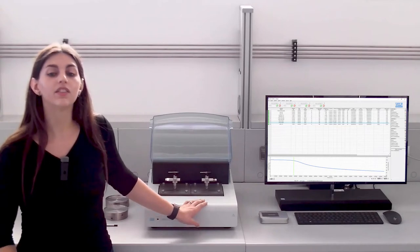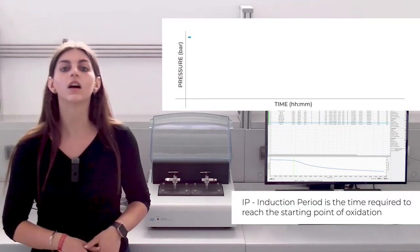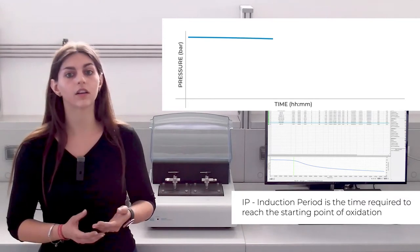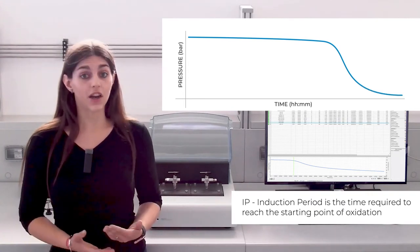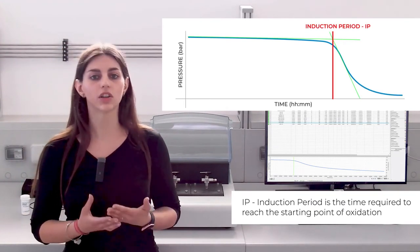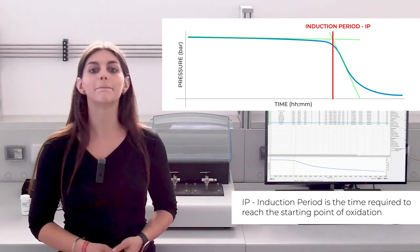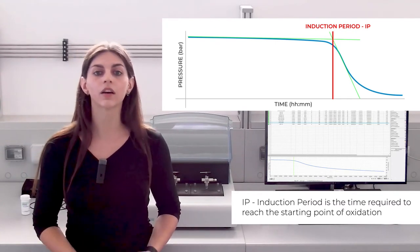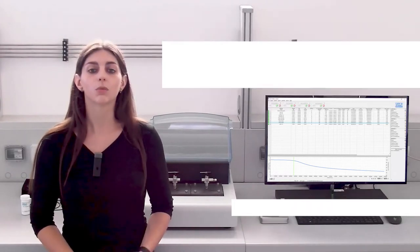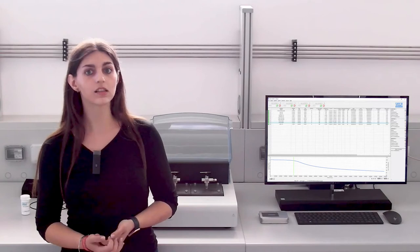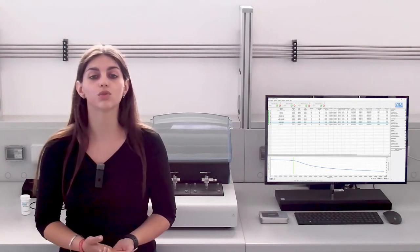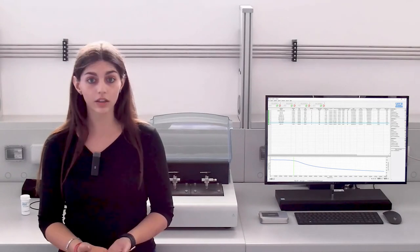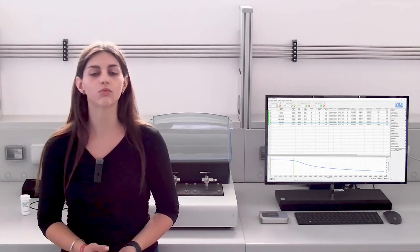What's the IP? The induction period — meaning the time required by the sample to reach the starting point of oxidation. The IP is generated automatically because the Oxytest is powered by the Oxysoft software, which allows you to generate IPs for further analysis, with many different IPs for several applications. And of course, it allows you to set all the parameters to start the analysis and monitor it in real time.